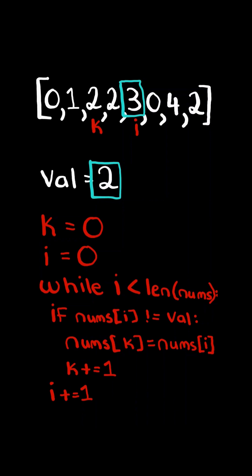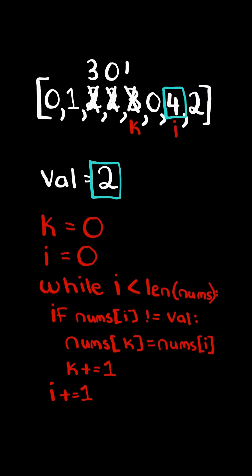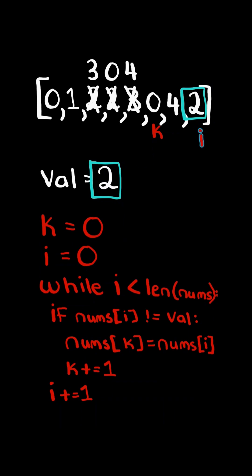Now the numbers are not equal, so we set nums at k equaling the value at nums at i, and we advance k and also advance i. Again the values are not equal, so we set nums at k equaling the value at nums at i, and we advance k and also advance i. Since the numbers are not equal, we set nums at k equaling the value at nums at i, and we advance both k and i. Now the numbers are equal, so in this case we only advance i.